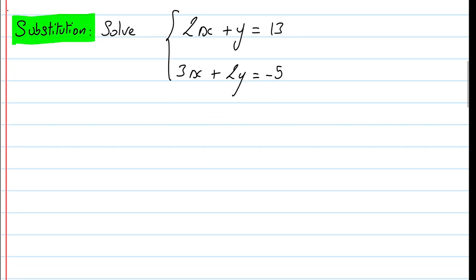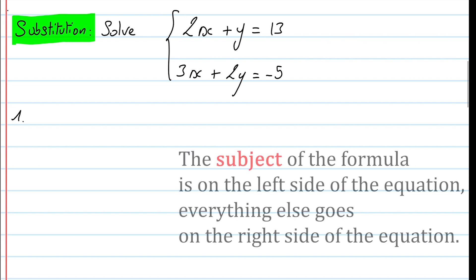Let's start by using the substitution method. We want to solve the system of equations: 2x plus y equals 13, and 3x plus 2y equals negative 5. The first step is to pick an equation and make y the subject. To make y the subject means we rewrite the equation as y equals 13 minus 2x.